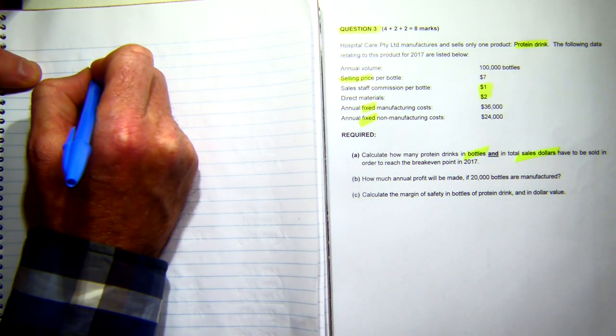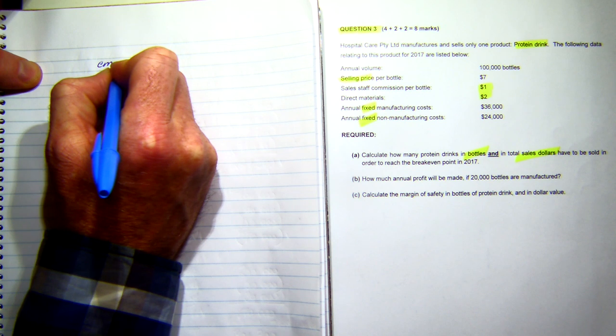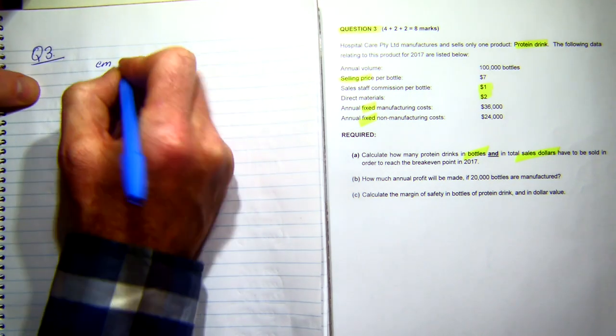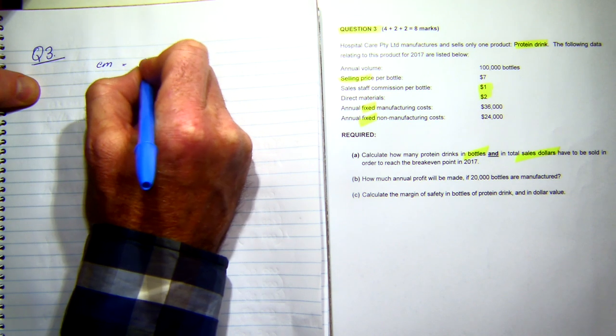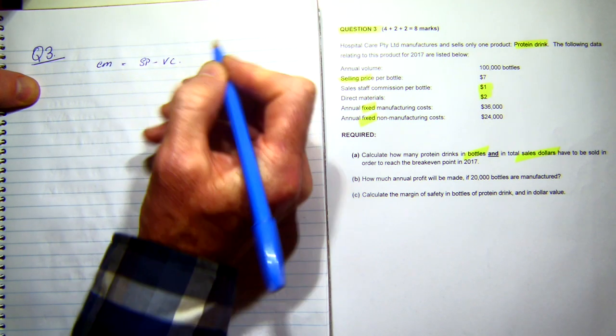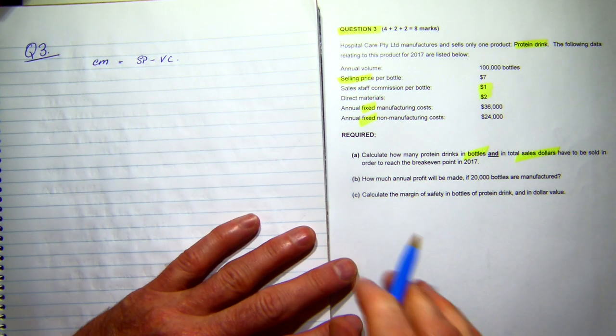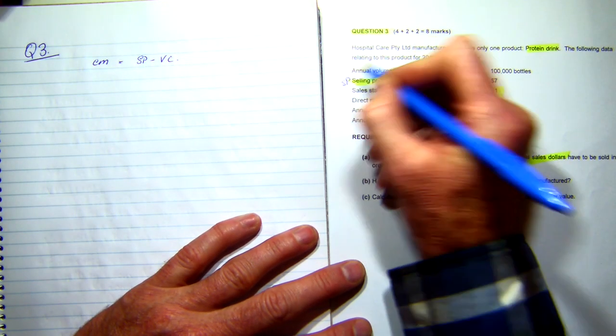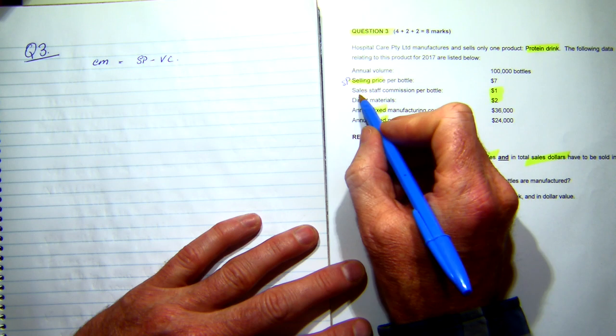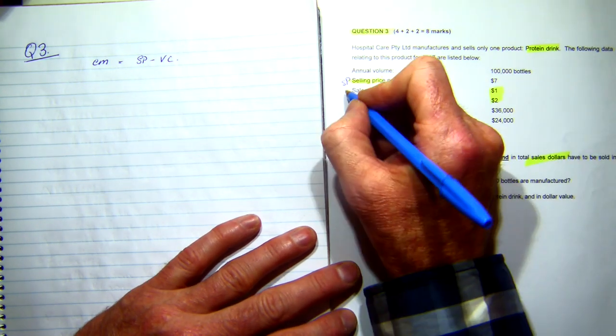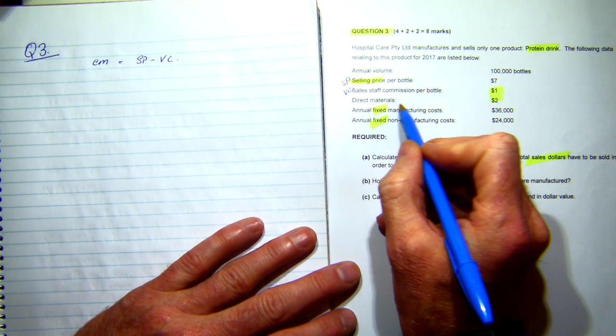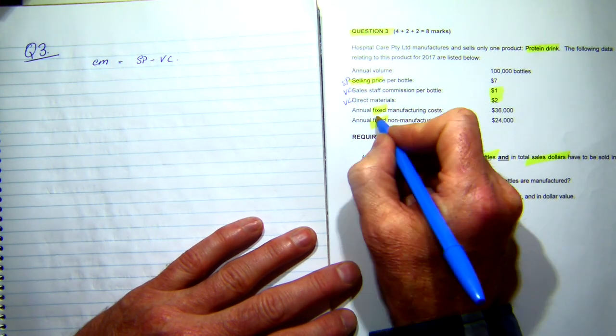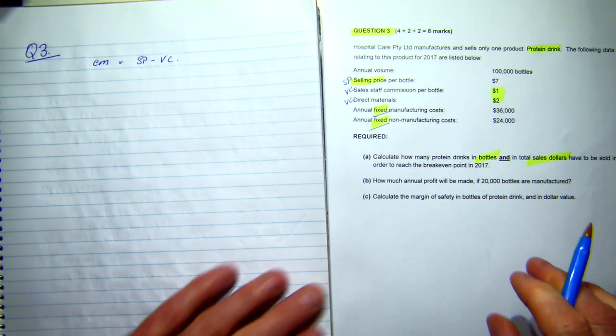First of all, first thing we need to calculate is a contribution margin. And my contribution margin, let's put Q3 up here, my contribution margin equals my selling price minus my variable costs. So let's have a look what we've got here. My selling price, that's my selling price there, so that's my first piece of information. Sales staff commission per bottle, so that'll be a variable cost. We've got direct material, so that must be the water that's in the bottle, so that's variable cost. We've got fixed costs and fixed costs there as well.